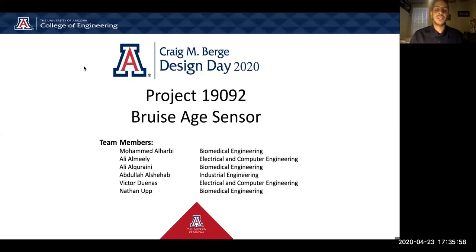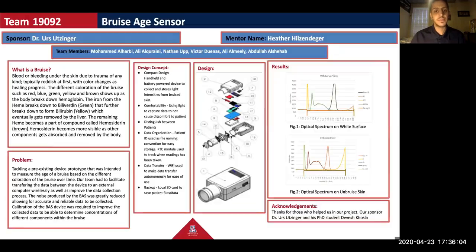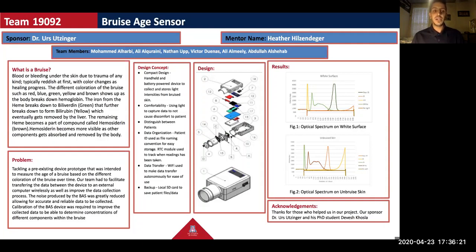Hello everyone and welcome to our senior design project, the Bruise Age Sensor. Today we'll be talking about our senior design Bruise Age Sensor, but to start we will talk about what is a bruise. A bruise is blood or bleeding under the skin caused by trauma. It looks reddish at first, and as healing takes place the colors start fading away from red to green, to yellow, all the way to brown.